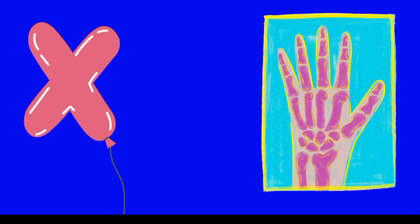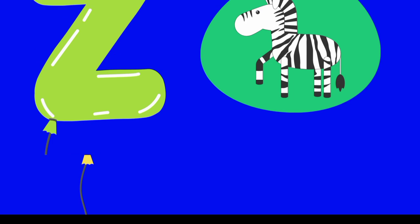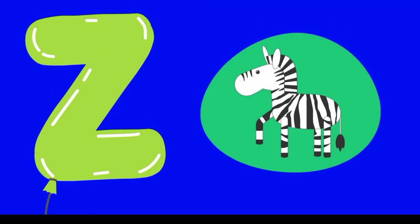X is for x-ray. Y is for yellow. Z is for zebra.